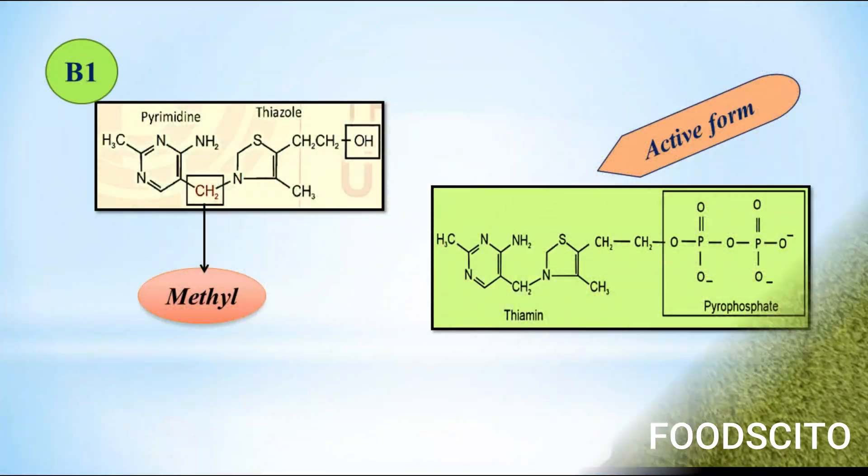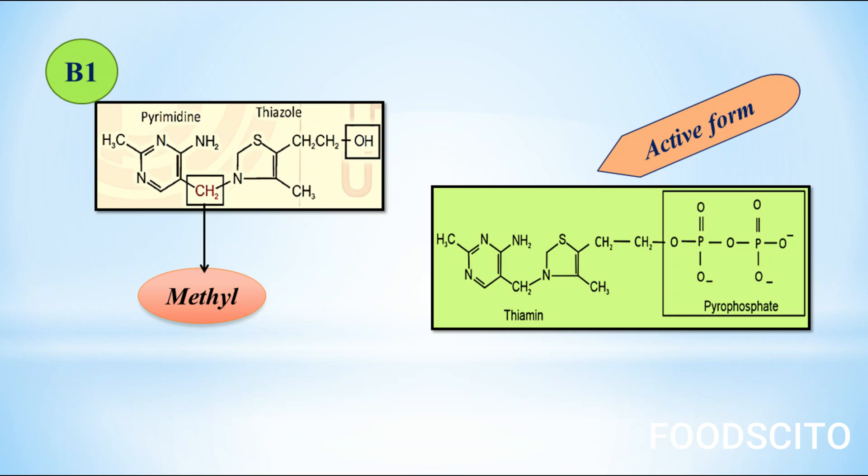Now let's talk about its structure. The structure of thiamine consists of a pyrimidine ring and a thiazole ring, and these rings are linked together by a methylene group — CH2. The name 'thiamine' comes from 'thia,' meaning a thiol group (SH) is attached.